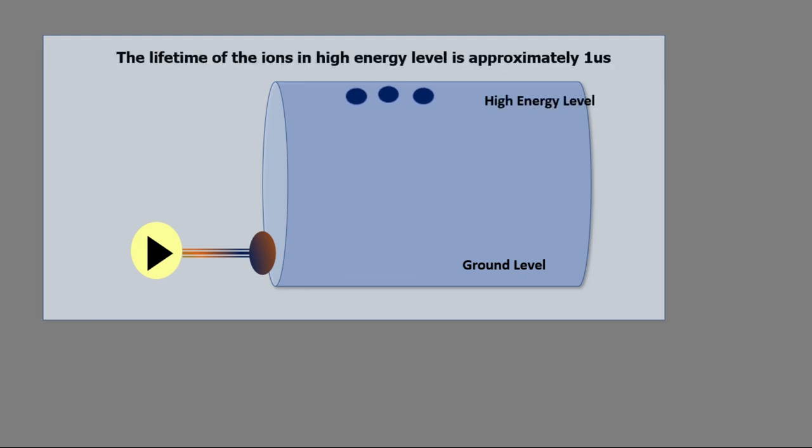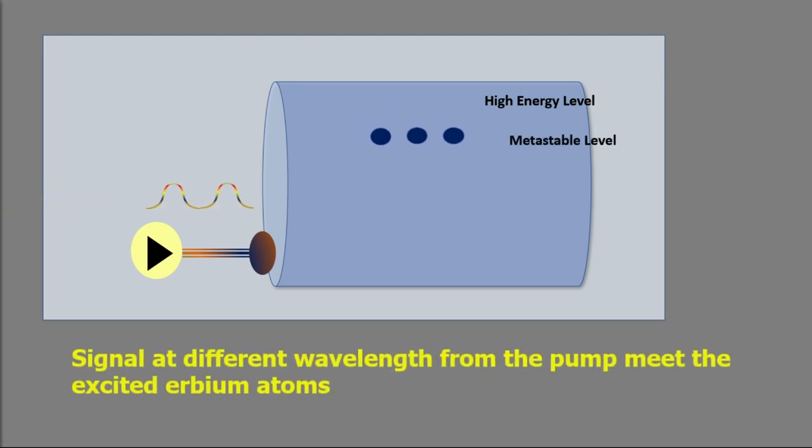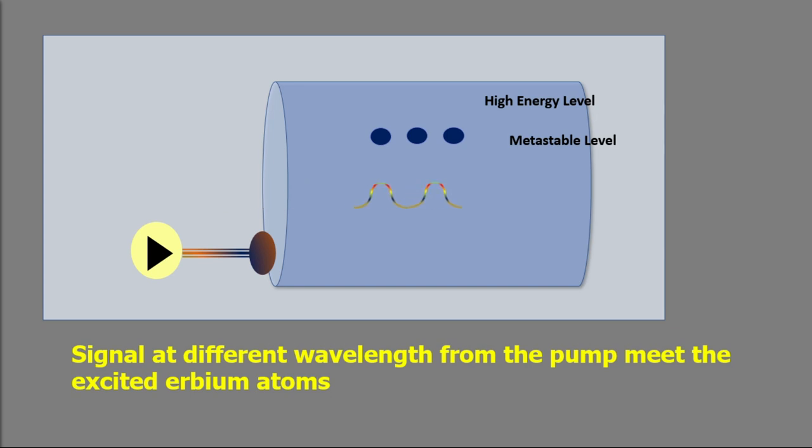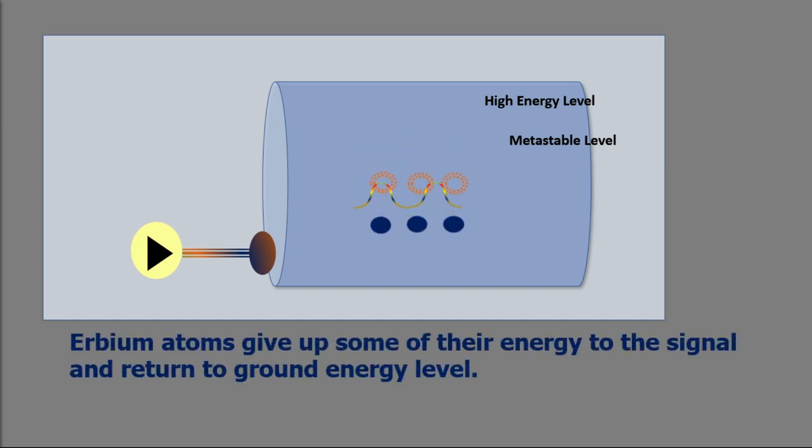The lifetime of the ions in high energy level is approximately 1 millisecond, and the ions readily decay to the metastable level. When the photon belonging to signal at different wavelength from the pump meets the excited erbium atoms, the erbium atoms give up some of their energy to the signal and return to ground energy level.